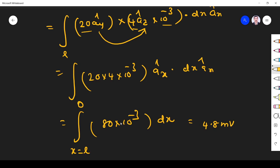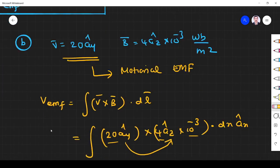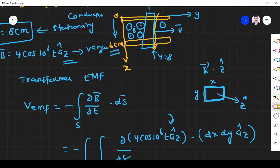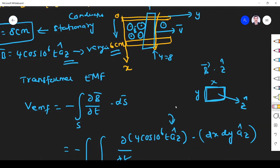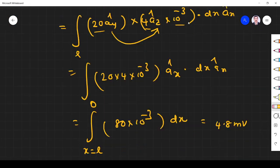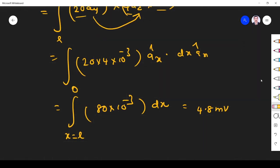See what is our length? L is varying from 6 centimeters, 0 to 6 centimeters. 0 to 6 centimeters means 0.06 meters. So what we get is 4.8 millivolts.